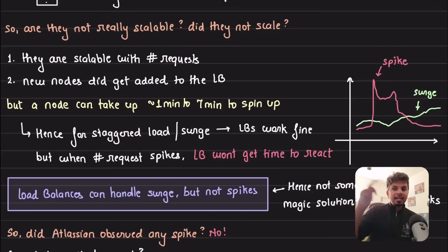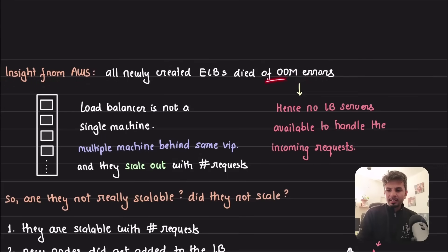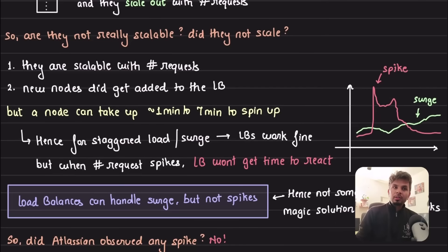Load balancers are scalable with respect to number of requests and new nodes did get added when the number of requests increased, but the newly added servers resulted in OOM errors. Remember the time it takes - when a load balancer scales and adds one server, the time it takes for that server to start serving requests is typically one minute to seven minutes.